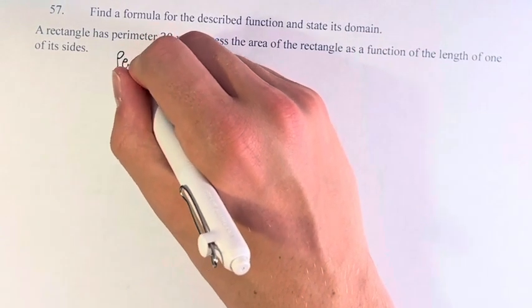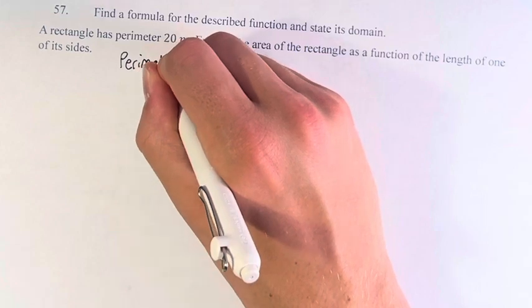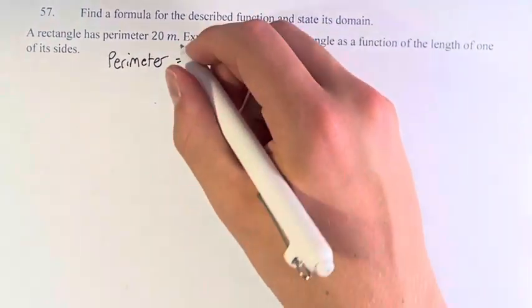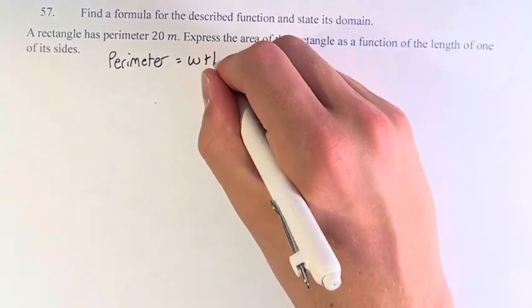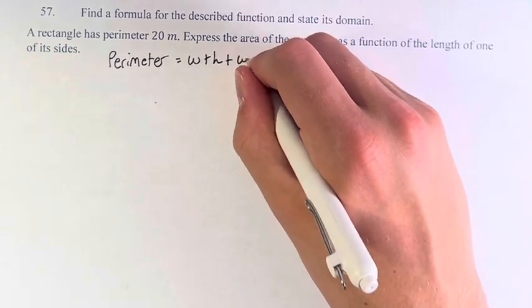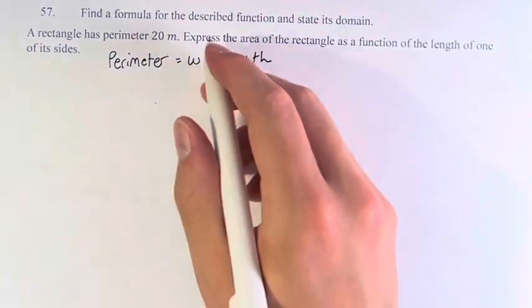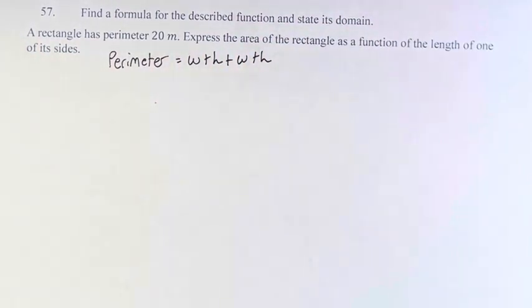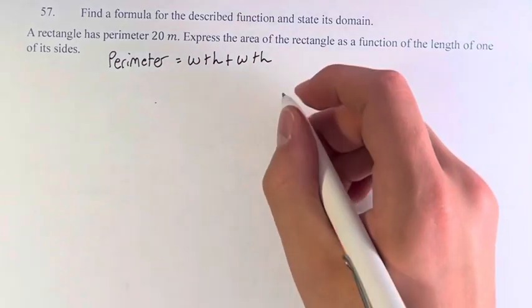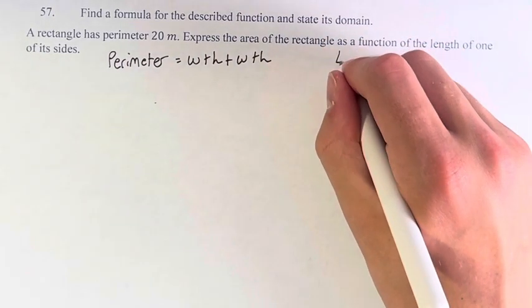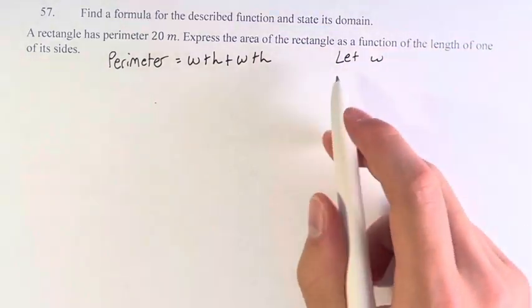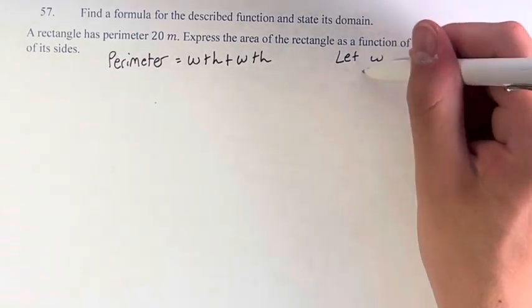So the perimeter of a rectangle is equal to the width plus the height plus the width plus the height. It's the sum of all the sides. Let w equal the side that we're talking about here. We want a function as the length of one of the sides. Let's do it in terms of the width.